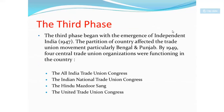The third phase begins with the emergence of independence in 1947. The partition of the country affected the trade union movement, particularly in Punjab and Bengal. By 1949, four central trade union organizations were functioning in the country. When the partition affected the trade union movement at that time, mainly in Bengal and Punjab, four central trade unions started working.